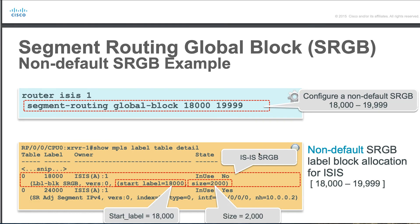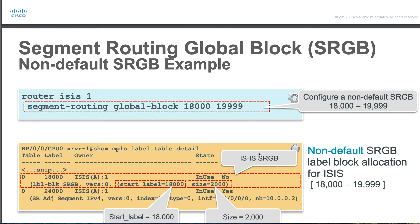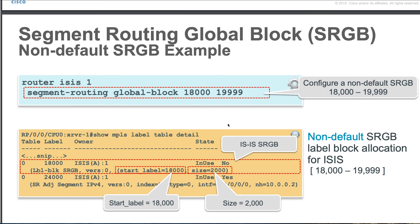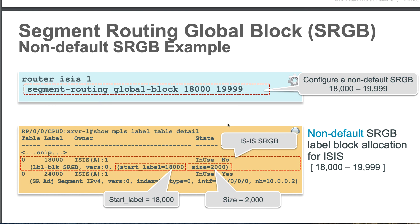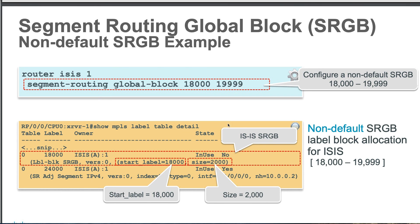That pretty much concludes a brief overview of the sRGB — the segment routing global block. This will come in very handy when we work with the hands-on labs. We need to keep in mind where those unique prefixes are coming from, how they're assigned or configured, and what we see in our route table or FIB table. That's why it's really important to know about the sRGB.